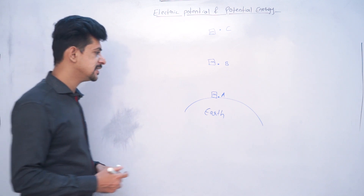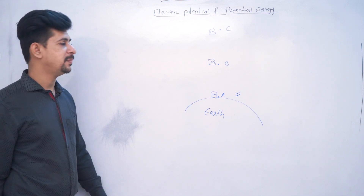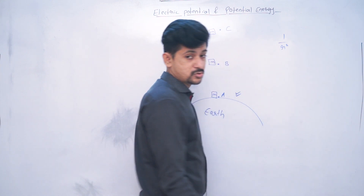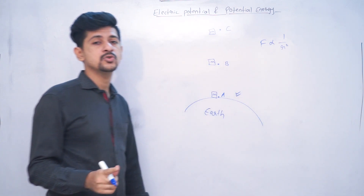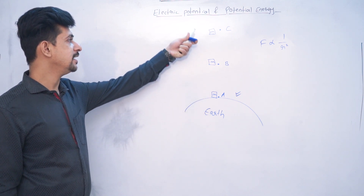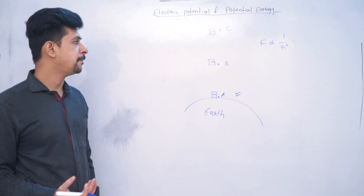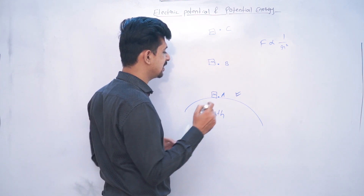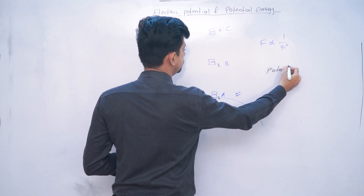Your answer should be obvious — it will be the most acceleration due to gravity at the point closest to Earth. Why? Because gravitational force also follows the inverse square law. This means the force is inversely proportional to the square of the distance between both the bodies. So if you go closer to Earth, you will experience the most force of attraction.